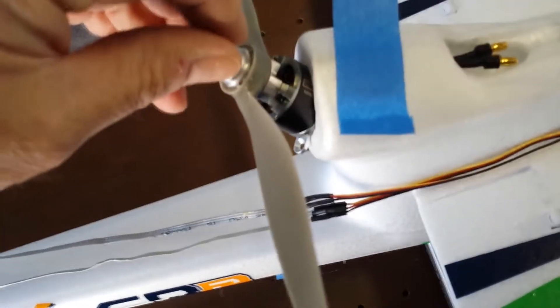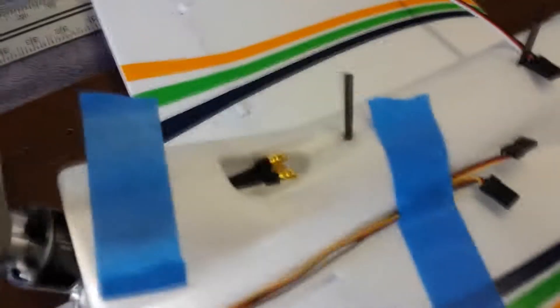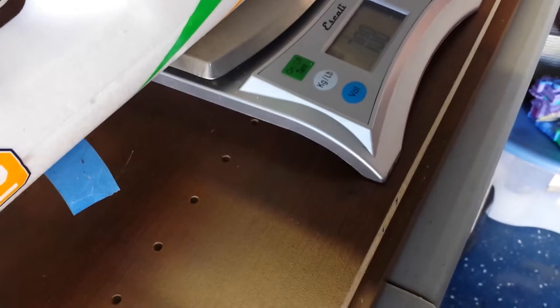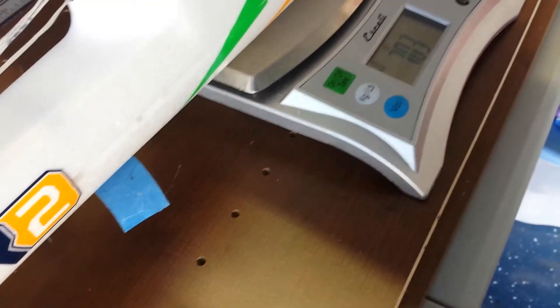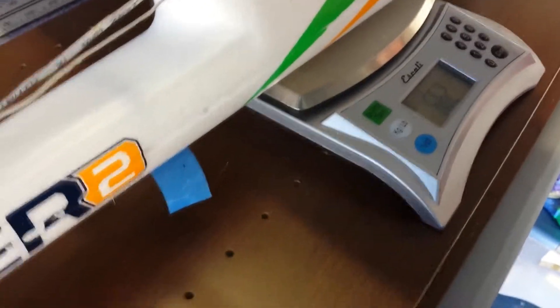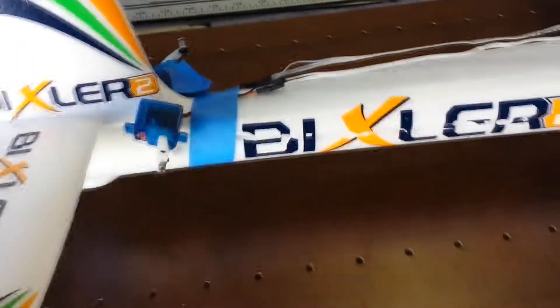So I've got the motor kind of stuffed in here temporarily, the speed controller just laying on top. Everything all taped together. I've got a battery down inside the nose of the fuselage, and I actually have it on scale. I've got a total weight here, it's right around 675 grams total weight without a few little minor things that still need to be added.